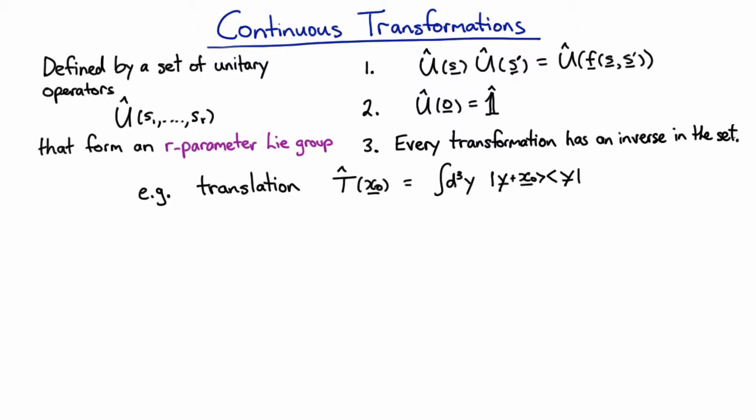If they depend on continuous variables, S1 to SR, R of them, then you've got an R parameter Lie group. An R parameter Lie group has the identity.